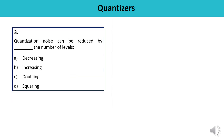Question 3: Quantization noise can be reduced by doing what to the number of levels — decreasing, increasing, doubling, or squaring? The process of quantization replaces the true signal with an approximation, and by increasing the number of quantization levels, the quantization noise can be reduced. The correct answer is B.